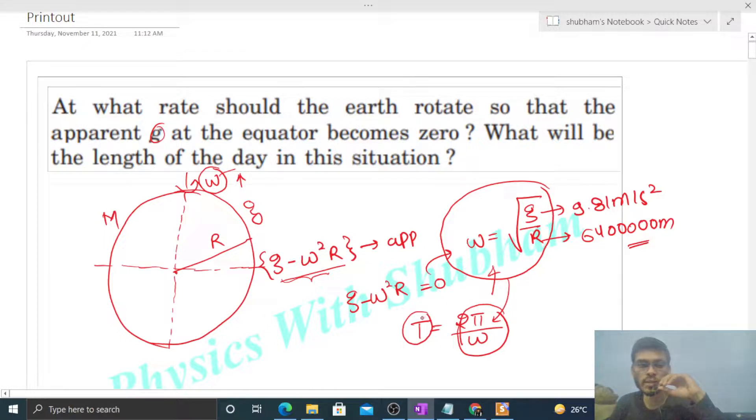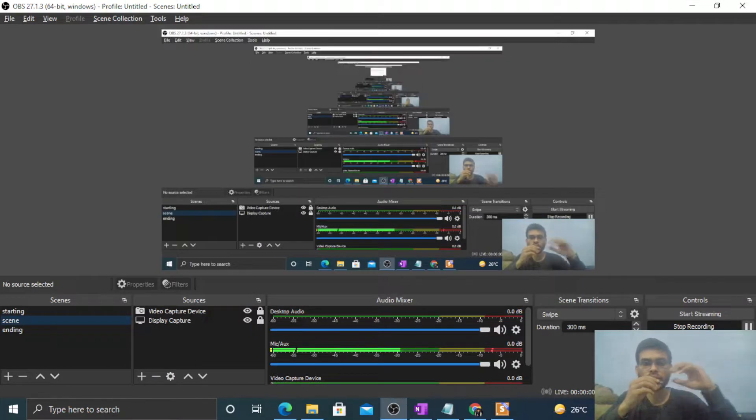That is the time period taken by the Earth to complete an angular displacement of 2π. This time period of one complete rotation is what is the length of the day, meaning one complete circle about its axis. That is the length of the day.